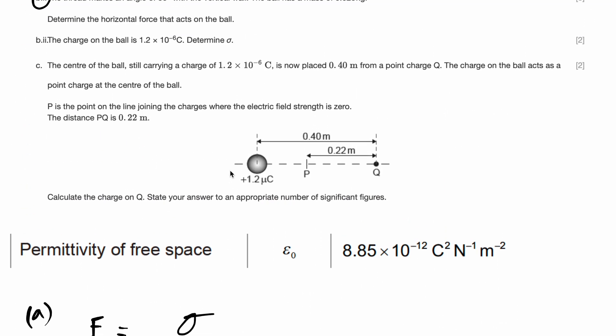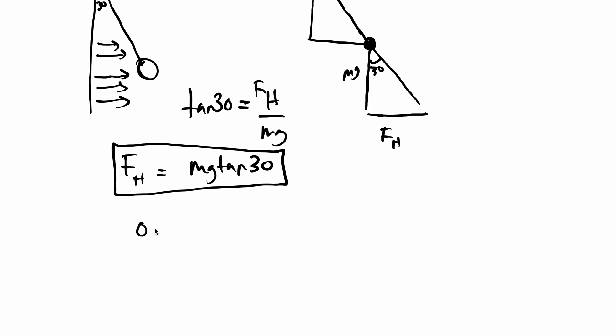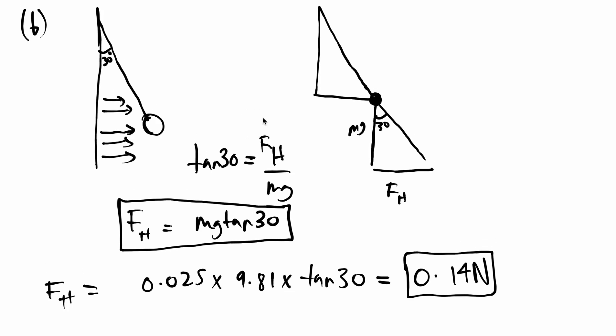We just solved that using our trigonometric ratio and right angle triangle properties. mg tan 30. So can we substitute certain things inside? What do we know is the mass of the ball? It's 0.025 kilogram. So let's just put it all in. 0.025 times 9.81 times tan of 30. What does that give us? If we put this on our calculator, 0.025 times 9.81 times tan of 30. That gives us 0.14 newtons.